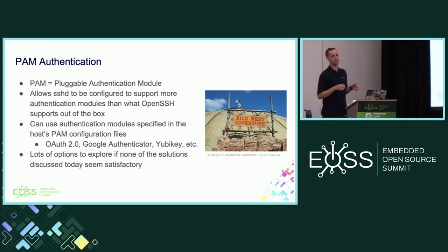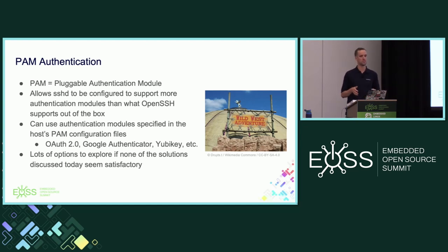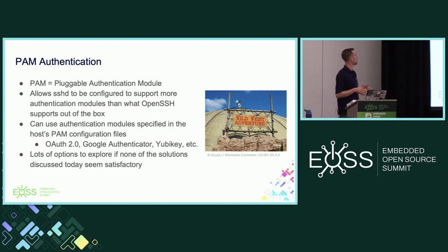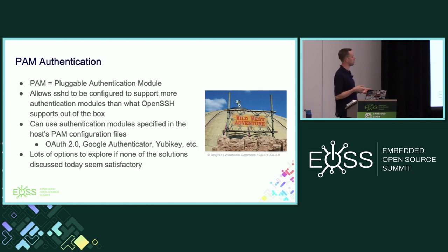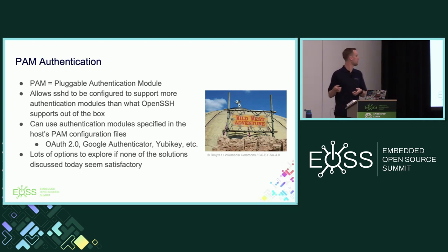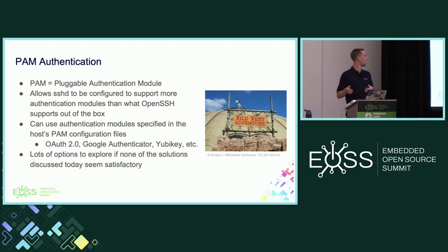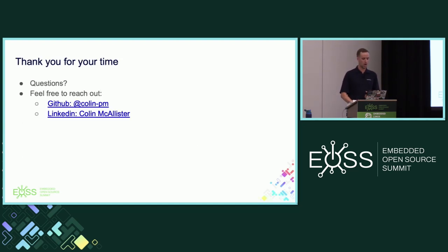If none of these solutions today seem like they work for your use cases, that's totally fine. One other thing I want to mention is PAM — Pluggable Authentication Module — another utility within Linux that allows you to use PAM authentication modules. A lot of them exist out there, like OAuth 2.0, Google Authenticator, YubiKey. You can specify within your PAM configuration files what you want sshd to use, and then configure sshd to use PAM authentication. This is kind of the wild west, and if any of you want to go out on your own adventure and explore some options there, feel free.